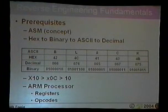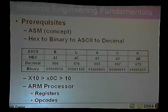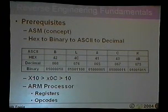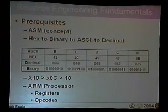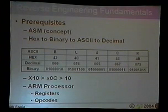Prerequisites for reverse engineering: you need to understand assembly — where it runs, how it works, and how to recognize it. You need to convert hex/binary to ASCII and decimal. You need to understand the ARM processor — specifically its registers and opcodes. The register is simply a place to hold a value while the processor uses it. We'll focus on registers R0 through R15. There are 37 total, but most aren't relevant here.